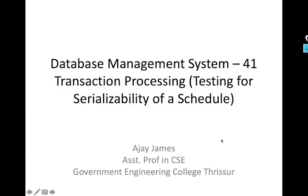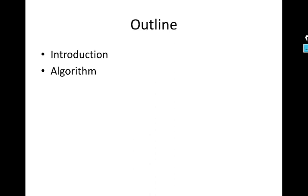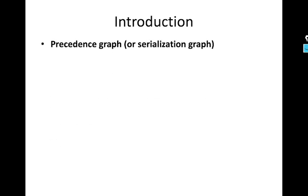Hello all. In this lecture, we will see how to test serializability of a schedule. There is a simple algorithm for that. We will see what that algorithm is and also we will see some examples. Before going into this testing algorithm, we will be doing some examples. Here, we will have an algorithm to determine whether a particular schedule is serializable or not. Most of the concurrency control methods actually do not test for serializability, but they develop some rules and check whether those schedules are following these rules.